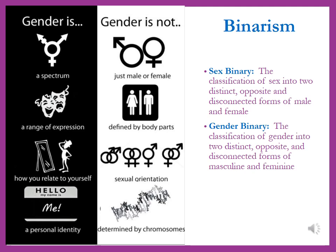Now that you understand the difference between sex and gender, let's talk about what scholars call binarism or the binary. This is a gender system with a social boundary that discourages people from crossing or mixing gender roles, or from identifying with forms of gender expression other than the set masculine and feminine roles. A sex binary is a classification of sex into two distinct, opposite, and disconnected forms — you're either male or you're female. A gender binary is a classification of gender into two distinct, opposite, and disconnected forms — you're either masculine or feminine.